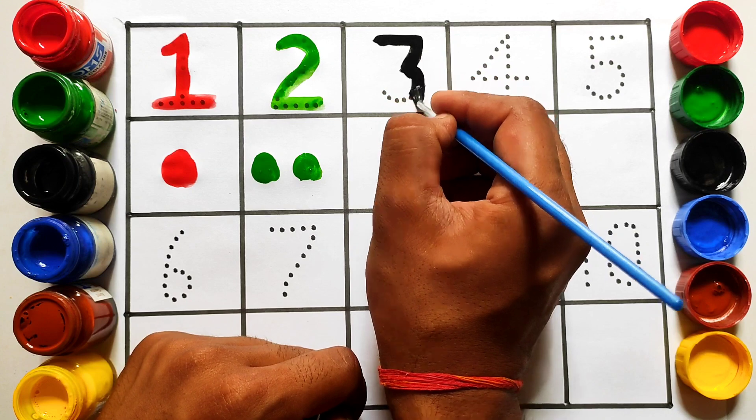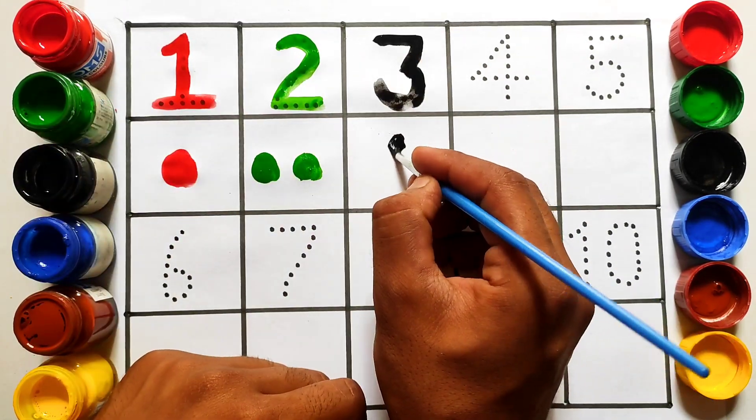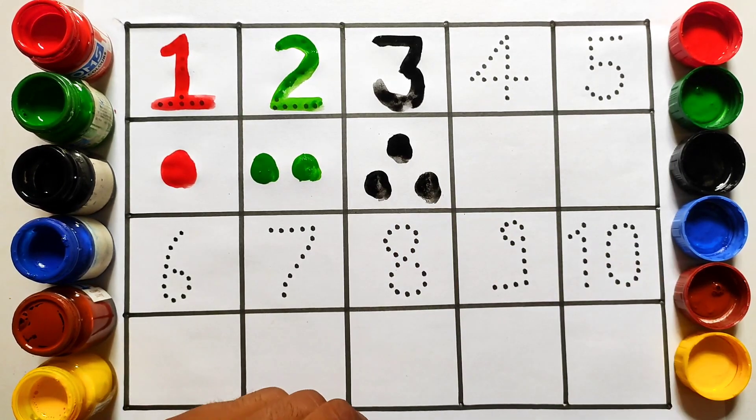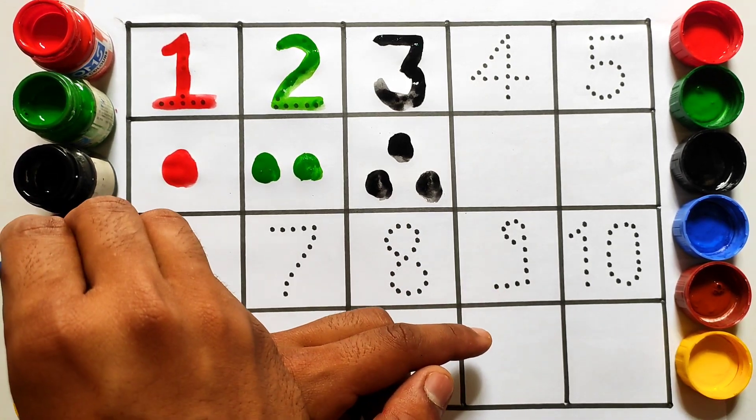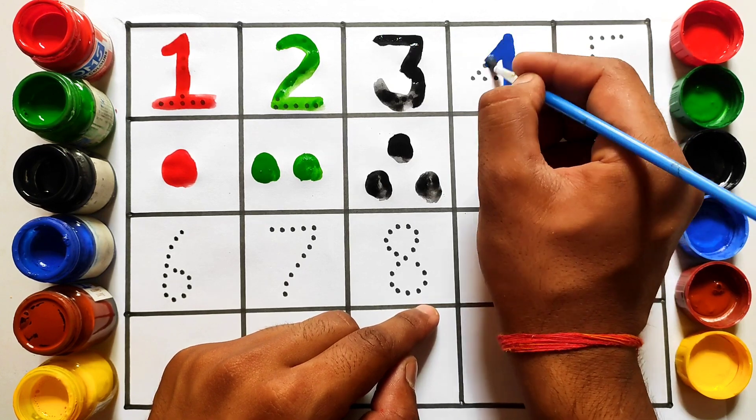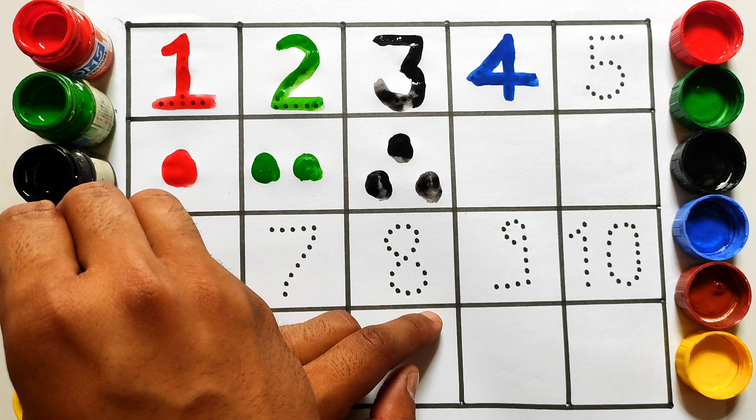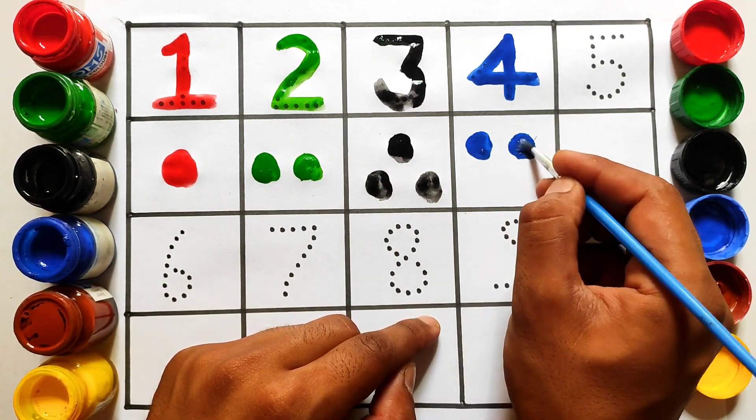T-h-r-e-e, three: one, two, three. Four, f-o-u-r, four: one, two, three, four.